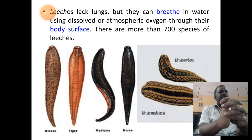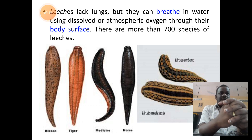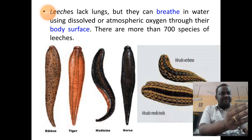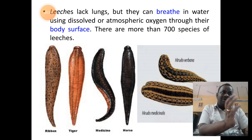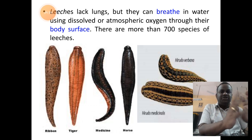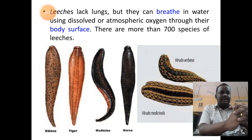Leeches generally respire through their body surface, absorbing dissolved oxygen present in the water or absorbing atmospheric oxygen from the air. This kind of respiration through which the body absorbs oxygen is called cutaneous respiration. They lack lungs, so lungs are totally absent in these animals.